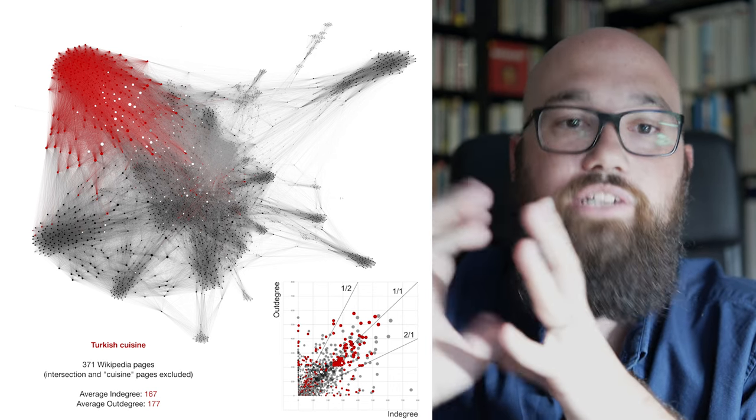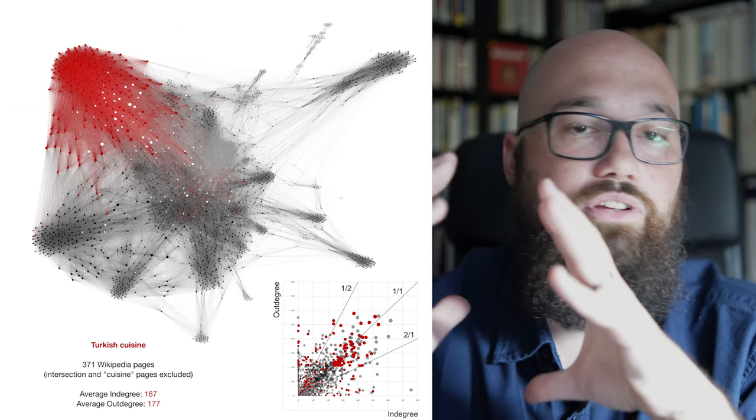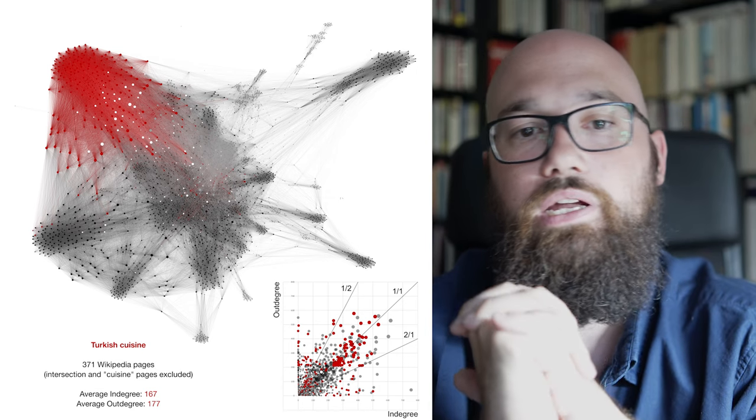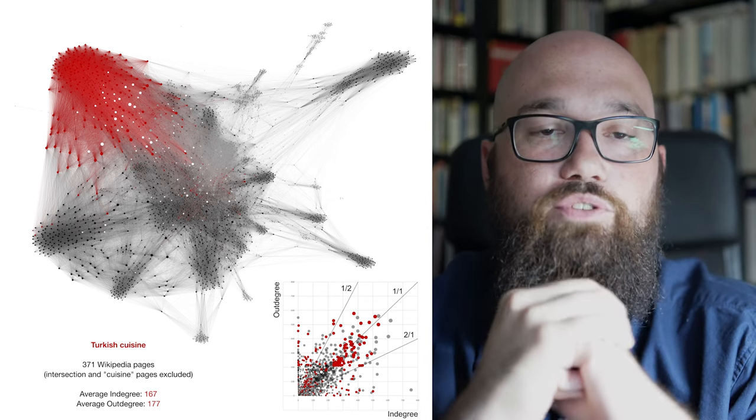So that's an artificial bias in a certain way, because probably the Turkish community on the English Wikipedia edited very highly these footers, elements or info boxes.